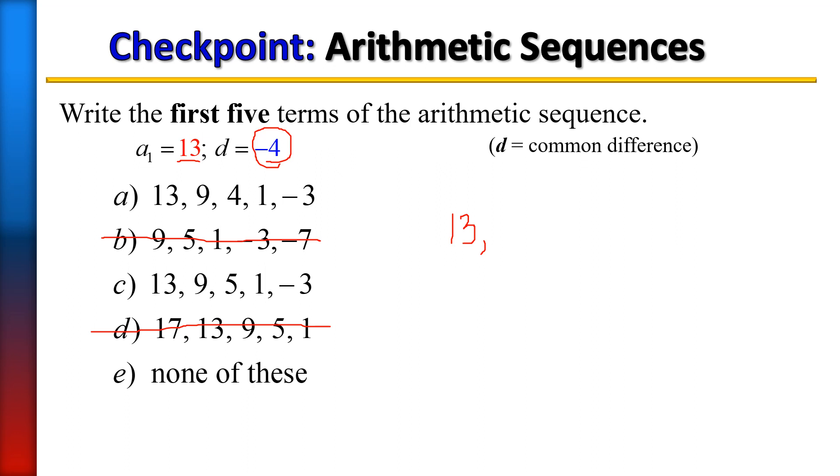So proceeding on, we have 13. If we take 4 from 13, we're left with 9. If we take 4 from 9, then we have 5. If we take 4 from 5, then we have 1, and 1...